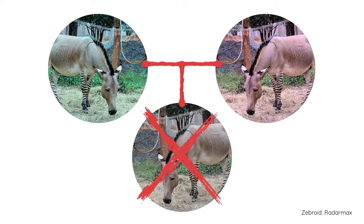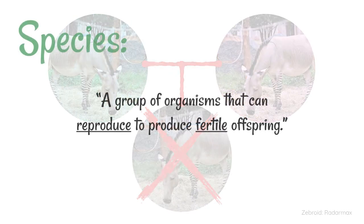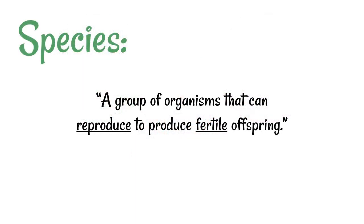Therefore, we can simply define species as a group of organisms that can reproduce to produce fertile offspring — and by that we mean offspring that can themselves produce more offspring.